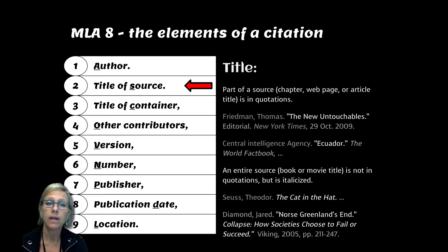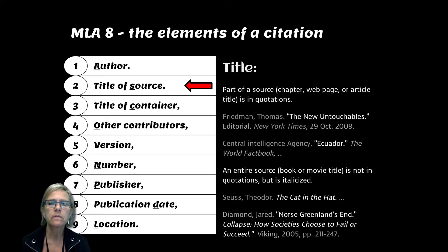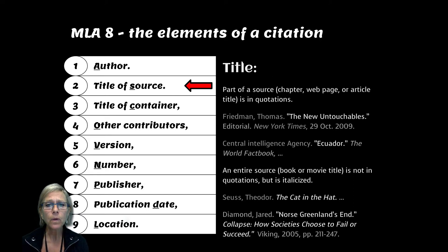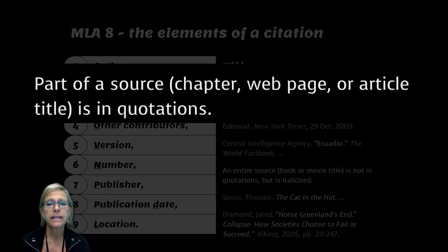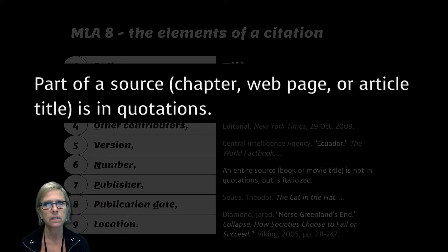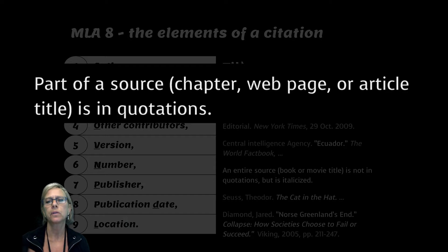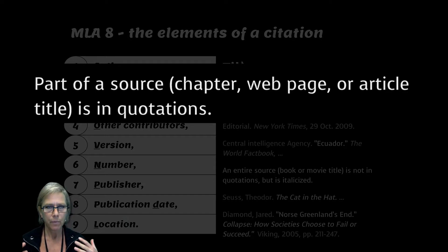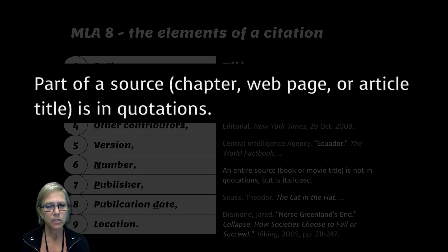The second element of MLA 8 is the title of the source, and the title of the source is only tricky in one way. It's either the part of the source — so the chapter in a book, or the webpage, or an article title from a magazine or newspaper — and that would be in quotations.